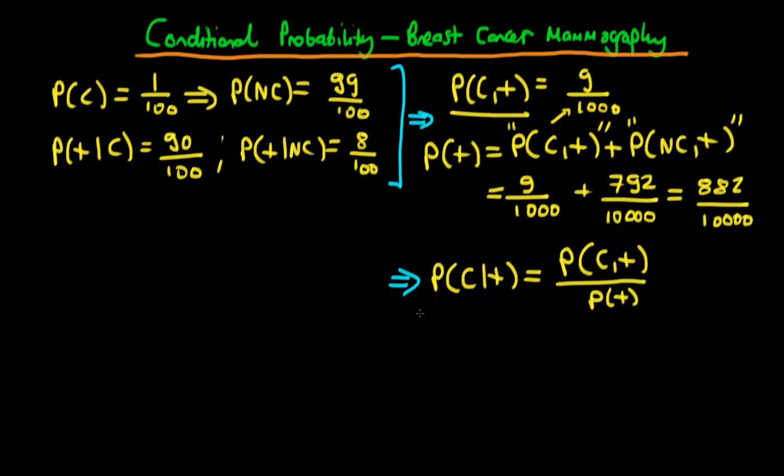Then if we put all this together to help us work out what is actually the probability that an individual who tests positive actually has cancer, which is this expression here, we know what the numerator of this is. The numerator is just the 9 over 1000, and the denominator here is 882 over 10,000. So if you were to put this into a calculator, you will get something which is approximately 0.1.